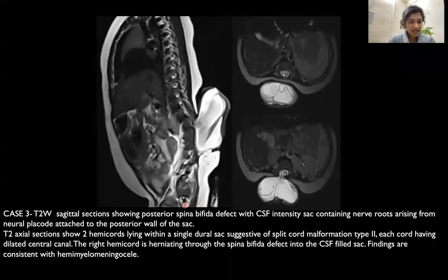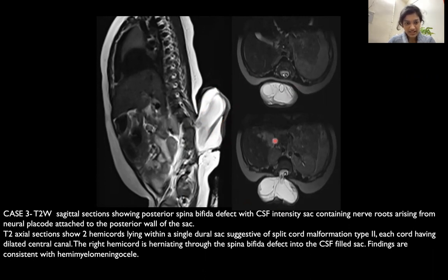The next case shows a T2 sagittal section demonstrating a posterior spina bifida defect with a CSF-intensity sac containing nerve roots attached to the posterior wall of the sac. On T2 axial sections, two hemicords are seen lying within a single dural sac, suggestive of split cord malformation type 2. Each cord has a dilated central canal, and the right hemicord is herniating into the CSF-filled sac.